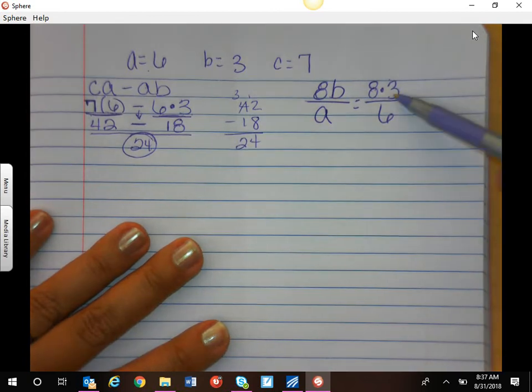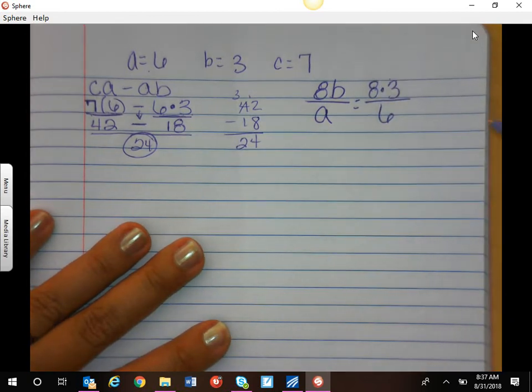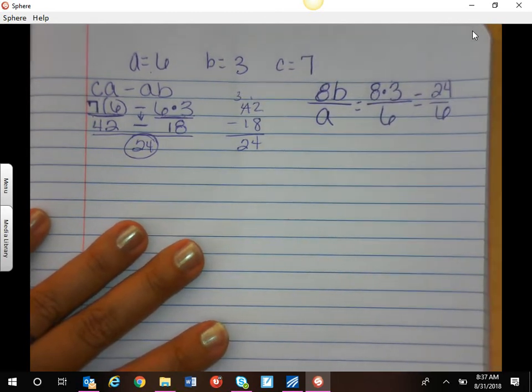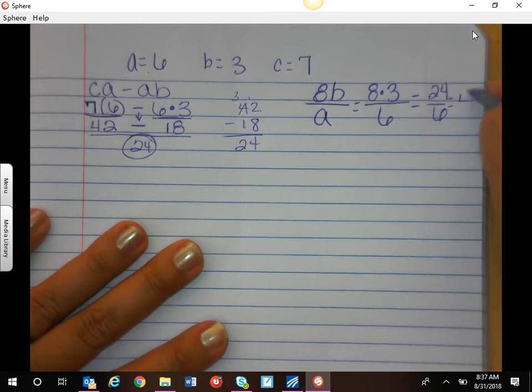You're going to have to solve the top. Multiply, divide. Numerators before denominators, 8 times 3 times 3 equals 24 over 6. And then divide, you get 4.